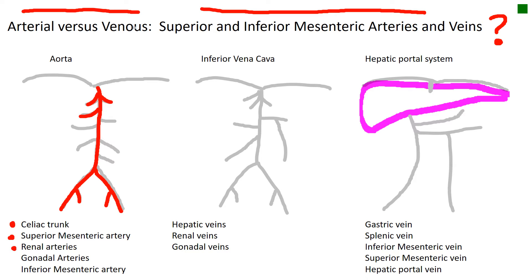Renal arteries — we have a left and a right renal artery going to the kidneys. Gonadal arteries serve the male and female sex glands. Then the last thing we're going to allow to exit in our picture is the inferior mesenteric artery, also to the intestine.